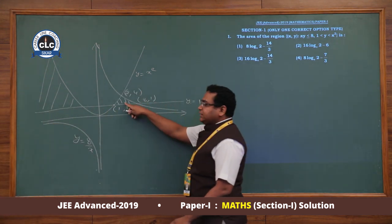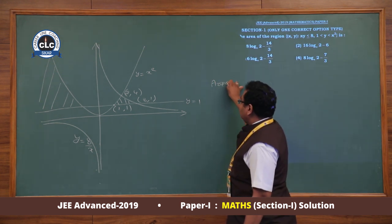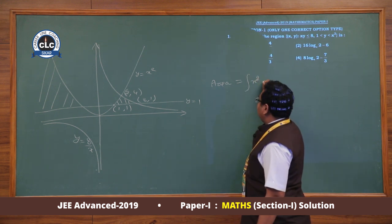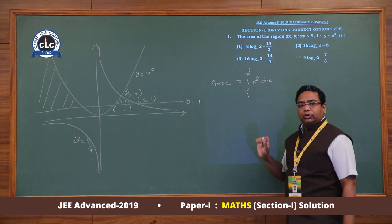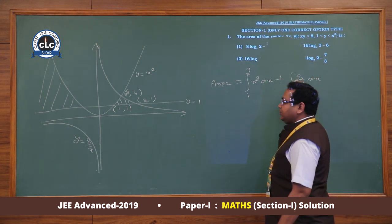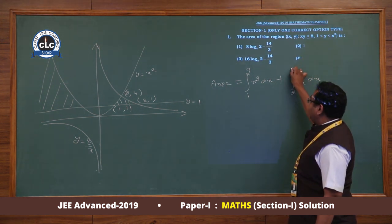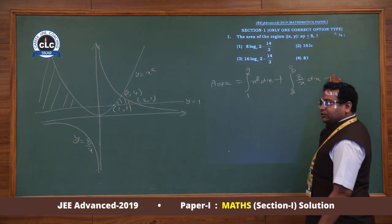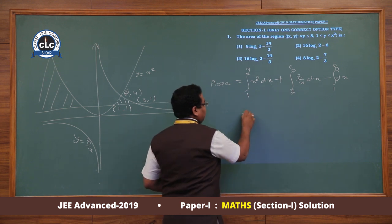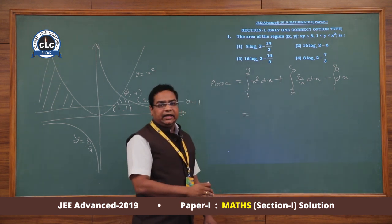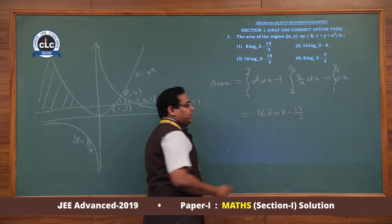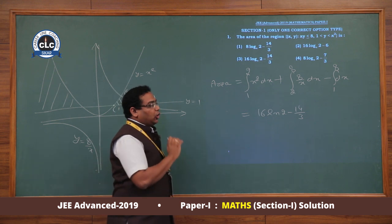If we calculate the area bounded by all these regions, this area becomes through integration: integral of x² dx from 1 to 2, plus integral of 8/x dx from 2 to 8, minus integral of dx from 1 to 8.